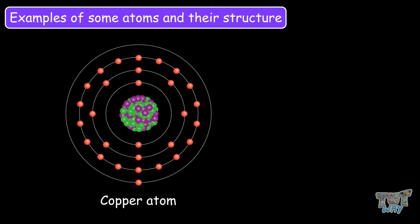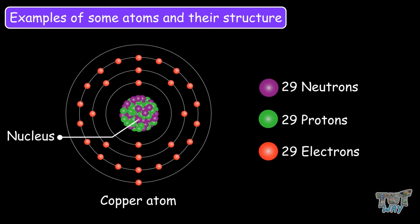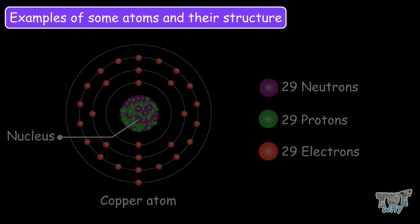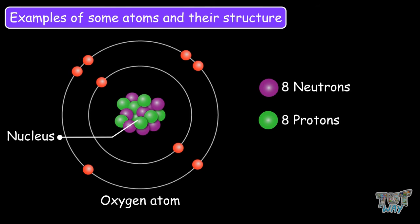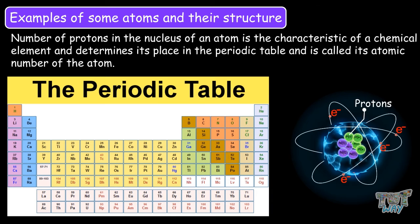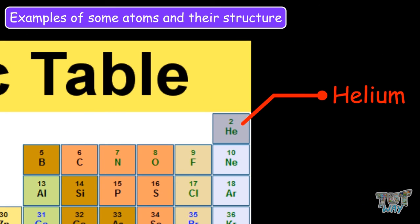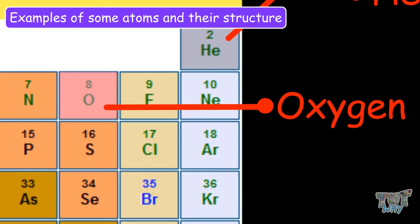This is the copper atom. It has 29 neutrons and protons in its nucleus, and 29 electrons in its electron cloud. This is the oxygen atom. It has 8 neutrons and protons in its nucleus, and 8 electrons orbiting around its nucleus. The number of protons in the nucleus of an atom is a characteristic of a chemical element and determines its place in the periodic table — it is called its atomic number. So, the atomic number of helium is 2, the atomic number of copper is 29, and the atomic number of oxygen is 8.